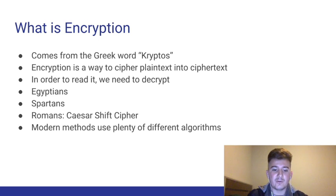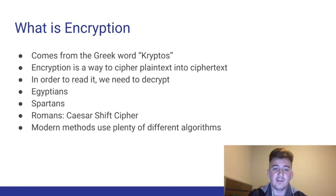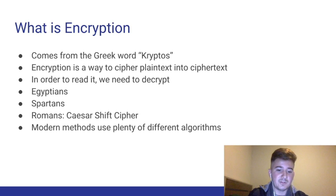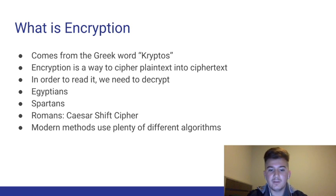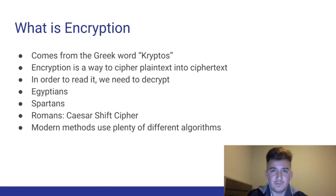But nowadays, encryption and decryption has taken a further step due to the Internet of Things. Now we have to use really complicated algorithms and techniques to encrypt and decrypt information so that it stays secure, because nowadays information going through the Internet can be intercepted by anybody and our information can be exploited. I'm going to pass this over to Piero, who's going to talk about the different techniques and algorithms used to encrypt and decrypt information.